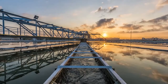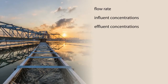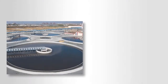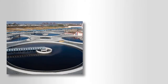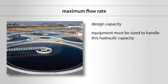The primary design criteria for any water treatment facility are flow rate, influent concentrations, and effluent concentrations. Two different flow rates must be considered. The maximum flow rate, for example 100 gallons per minute or GPM, is called the design capacity. All equipment must be sized to handle this hydraulic capacity.